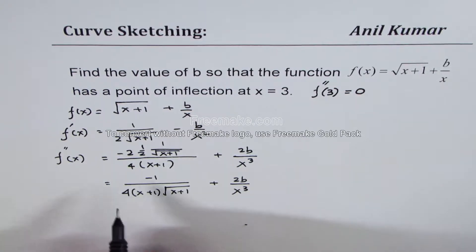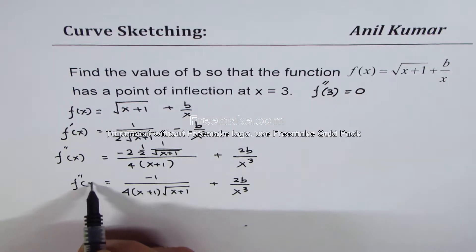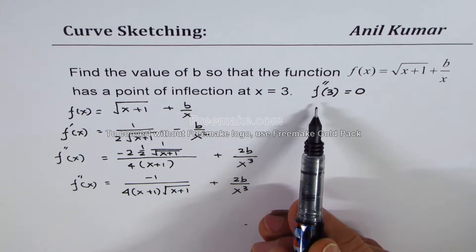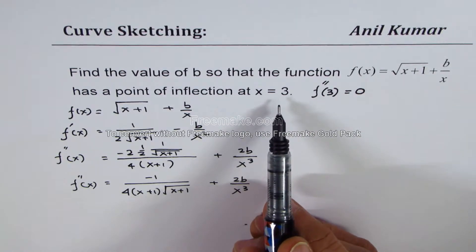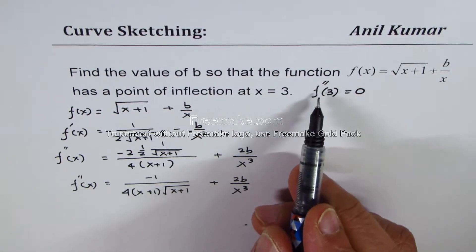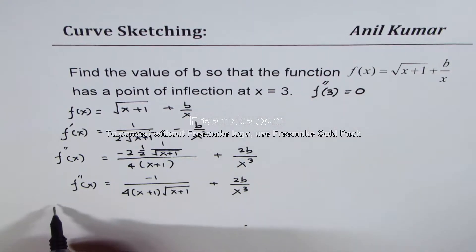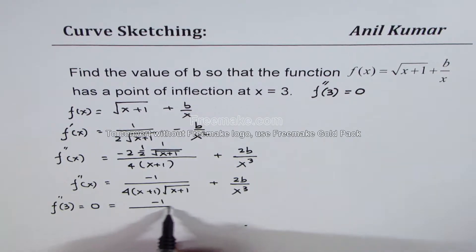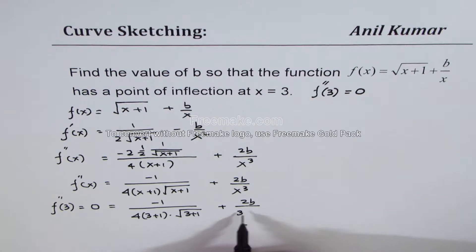Now that is the second derivative. What we are given here is that the point of inflection is at x equals 3, so that means second derivative at 3 is 0. Let's substitute x as 3: minus 1 over 4 times 3 plus 1 times square root of 3 plus 1 plus 2b over 3 cubed.